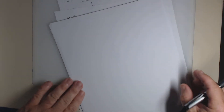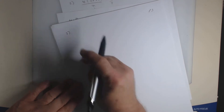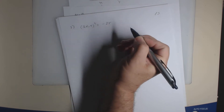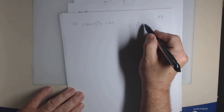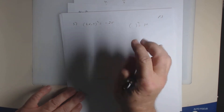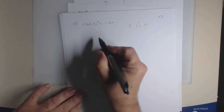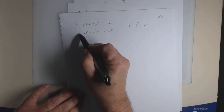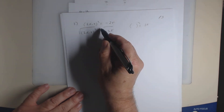Alright, now let's look at number 3. We have (2x minus 5) squared equals negative 25. What are you going to do? Take the square root of both sides, because it's in the form of some expression squared equal a number. Once it looks like that, you can take the square root of both sides.